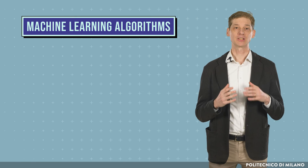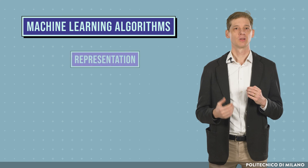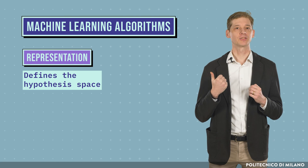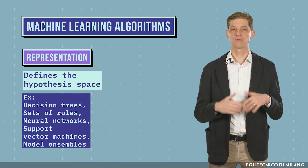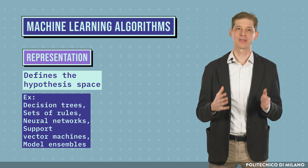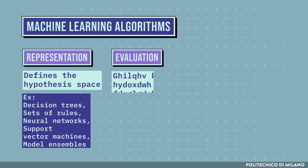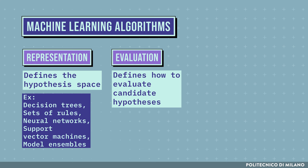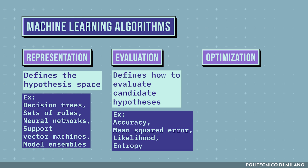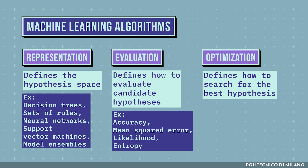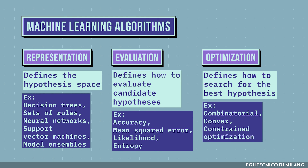To summarize, there are thousands of machine learning algorithms, but each one has three components. Representation, that defines the hypothesis space — examples include decision trees, set of rules, neural networks, support vector machines, and many others. Evaluation, that defines how to evaluate candidate hypotheses — examples include accuracy, mean square error, likelihood, and entropy. And optimization, that defines how to search for the best hypotheses — for example, combinatorial optimization, convex optimization, and constrained optimization.